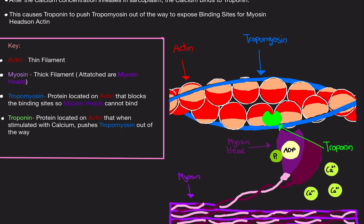Troponin is another protein located on actin. When it's stimulated with calcium, it pushes tropomyosin away, exposing the binding sites so myosin can bind.